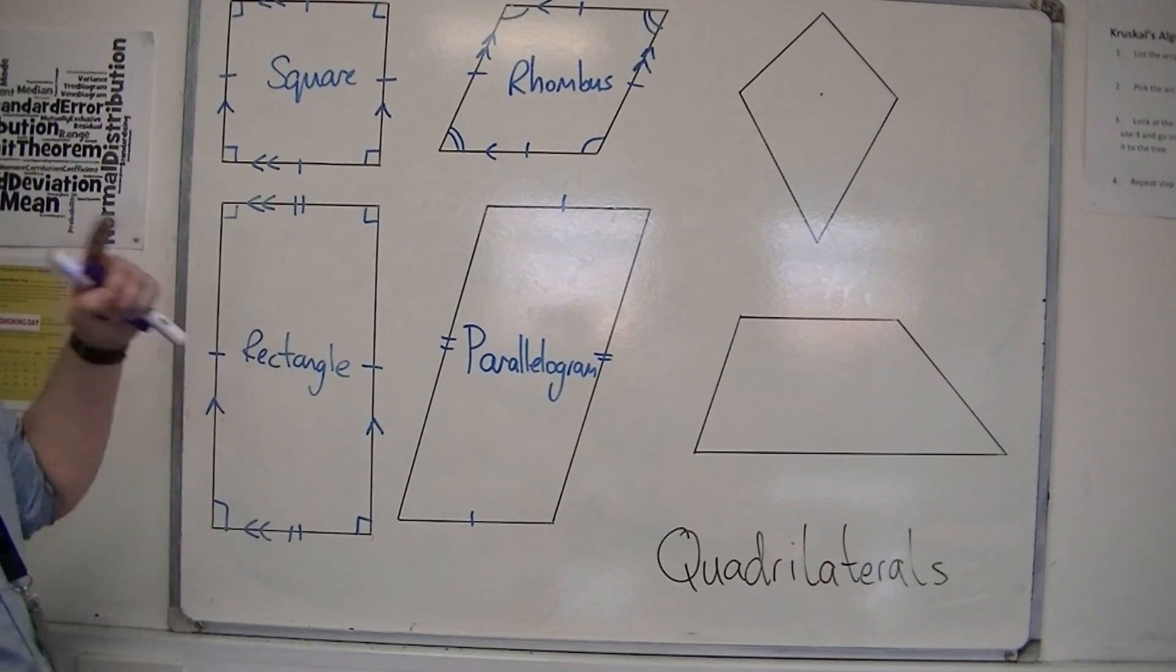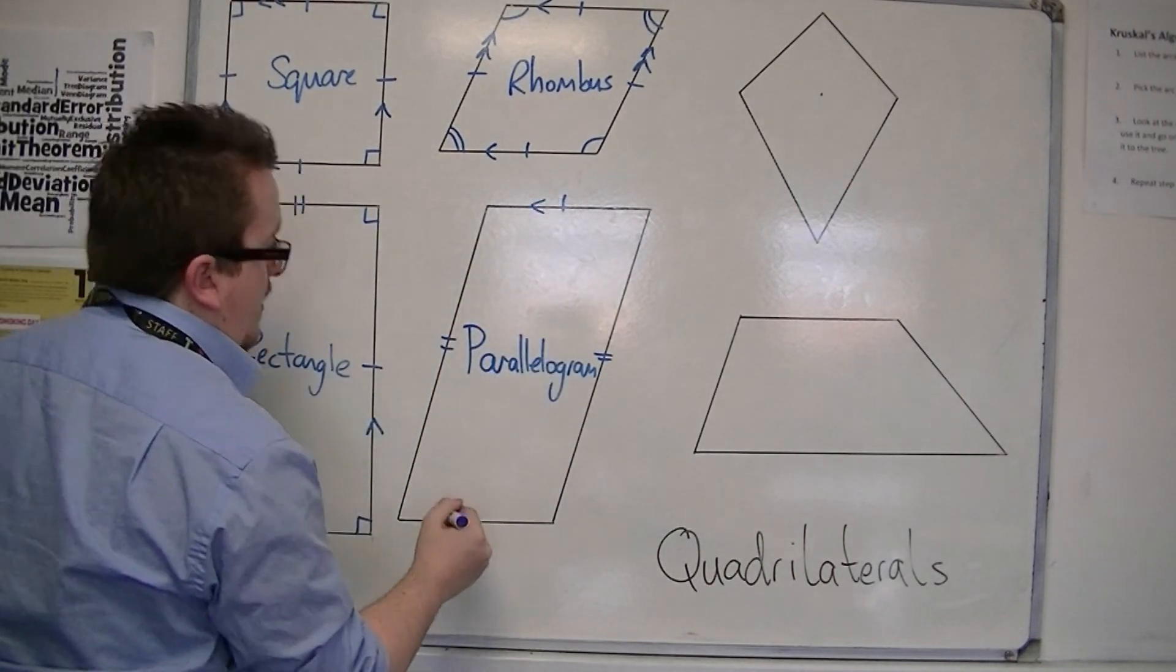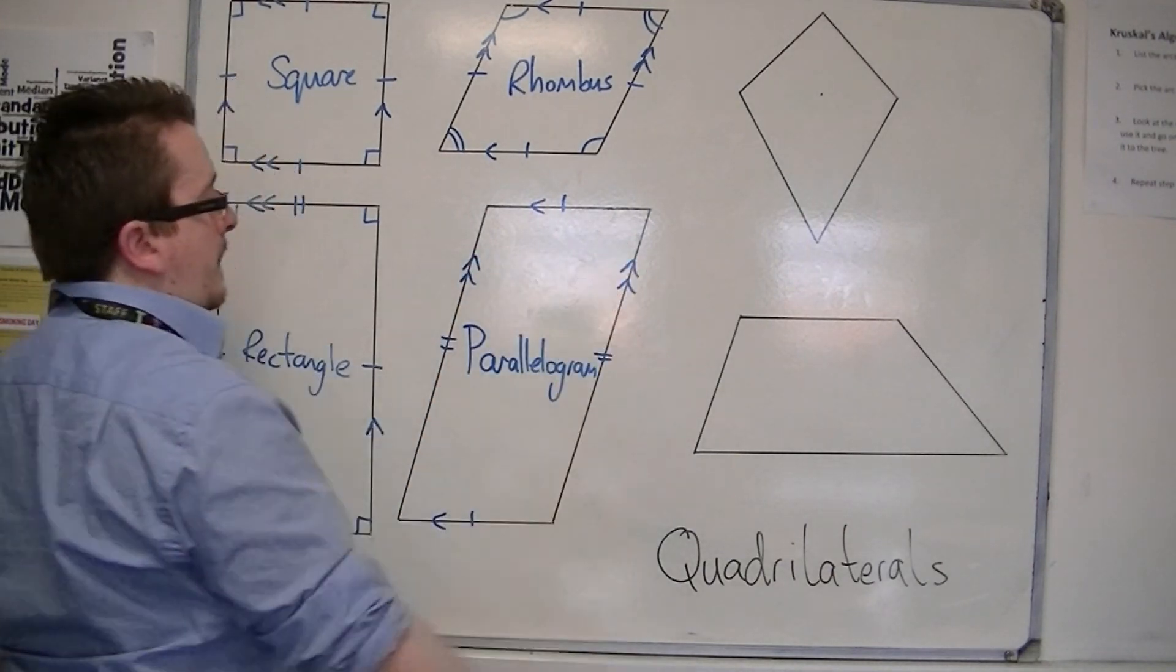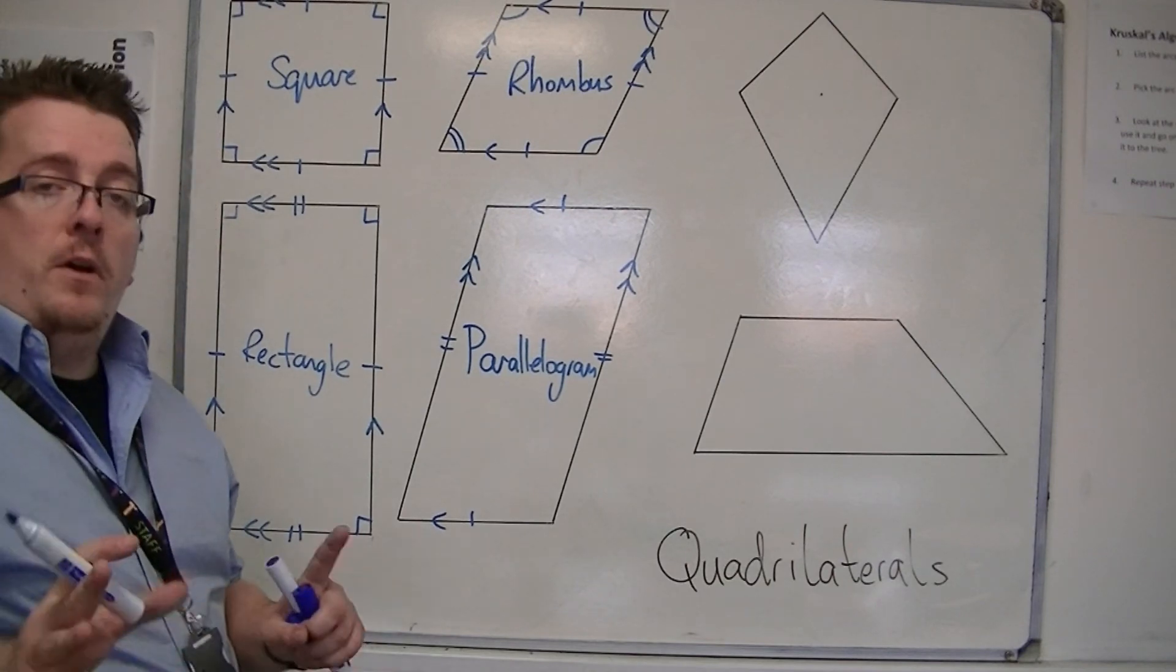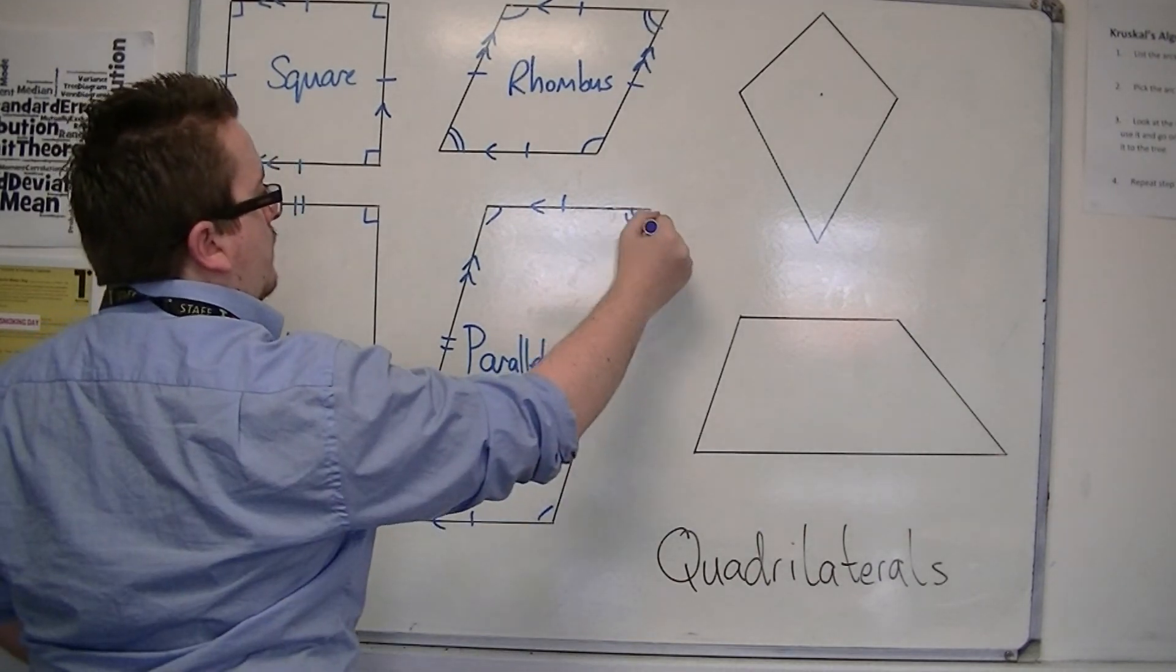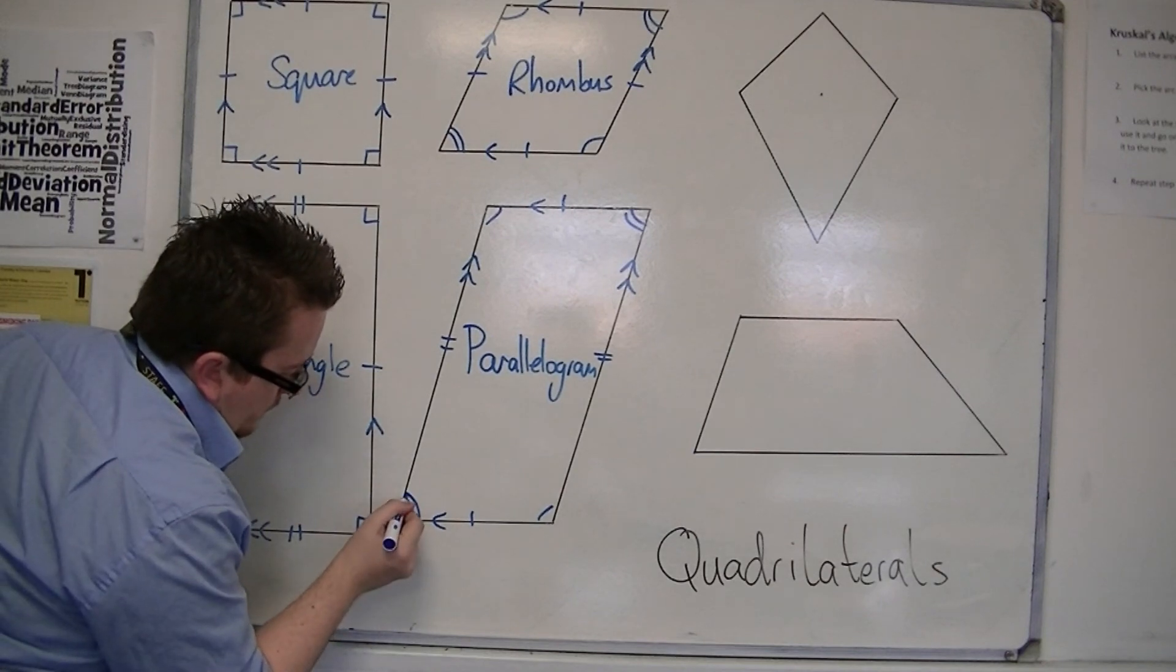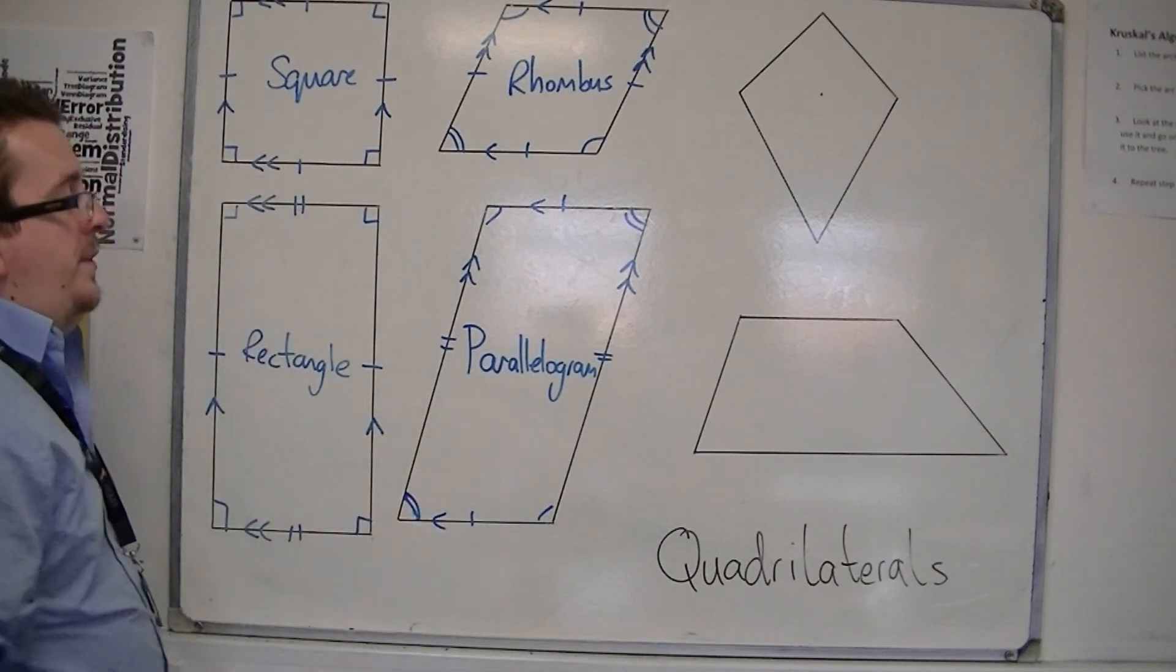Now, we've also got two pairs of parallel sides. Hence the name parallelogram. And we also have the idea of the opposite angles being the same. Didn't do that angle very well. It's a bit straight. So, these are the properties of the parallelogram.